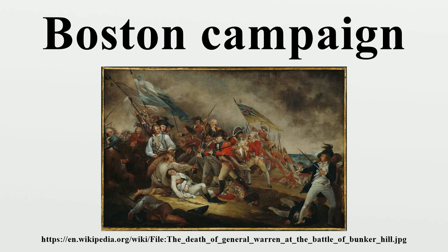At Concord, the troops searched for military supplies but found relatively little, as the colonists, having received warnings, had taken steps to hide many of the supplies. During the search, there was a confrontation at the North Bridge. A small company of British troops fired on a much larger column of colonial militia, which returned fire and eventually routed those troops. By the time the redcoats began the return march to Boston, several thousand militiamen had gathered along the road. A running fight ensued, and the British detachment suffered heavily before reaching Charlestown. With the Battle of Lexington and Concord, the war had begun.